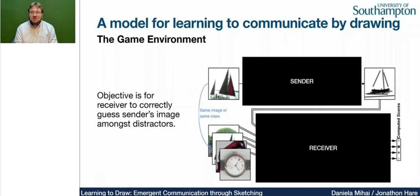We're now going to look at the computational model. Following many other works using referential games for emergent communication, we play a game with images. We have two agents: the sender agent and the receiver agent. The role of the sender is to take an image and turn it into a sketch. The receiver agent is given the sketch, a number of distractor images, and the target image, which is often the same image given to the sender. The receiver's job is to produce a vector of scores — one for each distractor plus the target image — giving the correct target image the highest score.